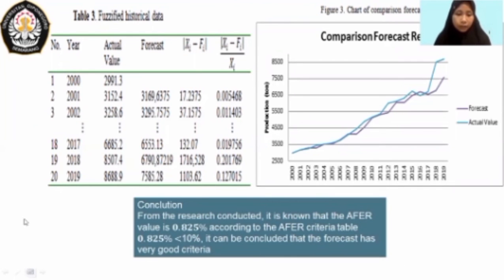And that's the comparison forecast result between actual value and forecast value. Table number three is the specified historical data. Conclusion of this result: from the research conducted, it is known that the AFER value is 0.825% according to the AFER criteria table.